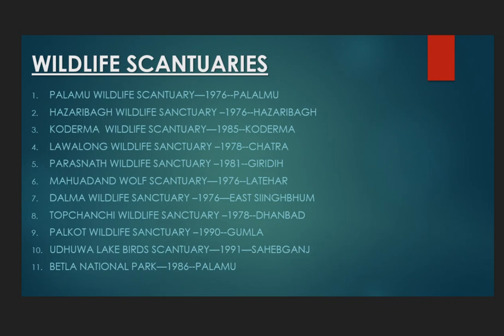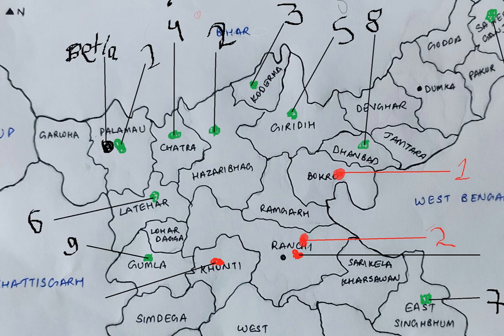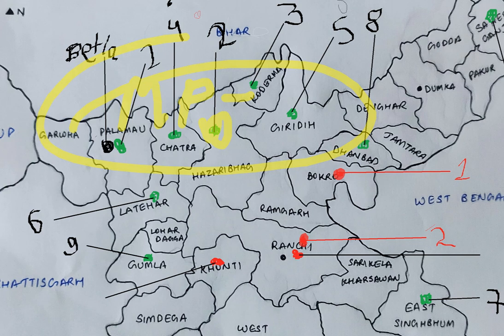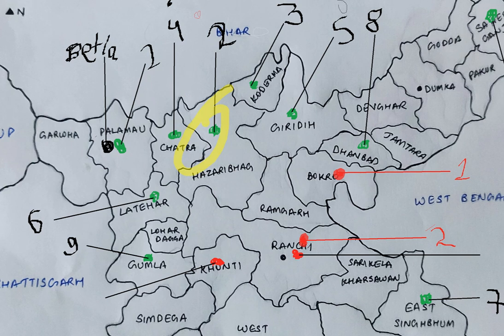Next is Hazaribag Wildlife Sanctuary. It was originally established in 1934, and the Madhya Pradesh government declared the Hazaribag forest as a national park. It holds a high number of wildlife species and has tropical dense forest with leopard and deer.